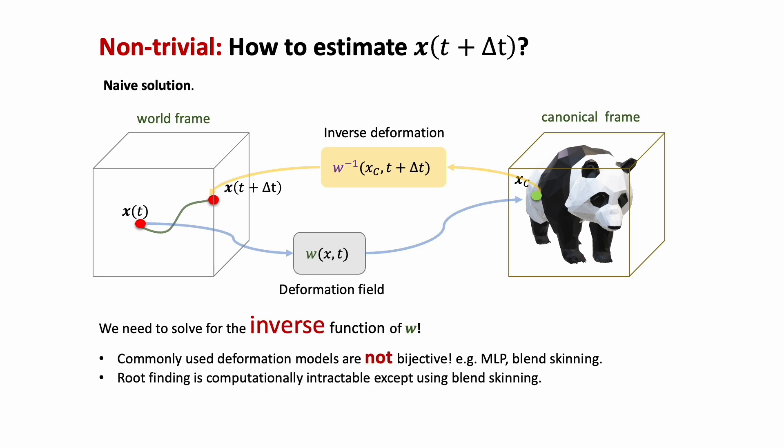Alternatively, root finding can be employed to find next positions without analytically inverting the deformation field. However, this approach comes with high computational costs, making it infeasible for non-blend skinning scenarios.